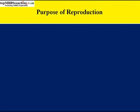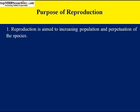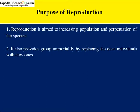What is the purpose of reproduction? Why does reproduction happen? Reproduction is aimed at increasing population and perpetuation of the species. First of all, reproduction is aimed to increase the strength of population, and next, perpetuation or existence of the species. So it is aimed at increasing population and existence of the species.